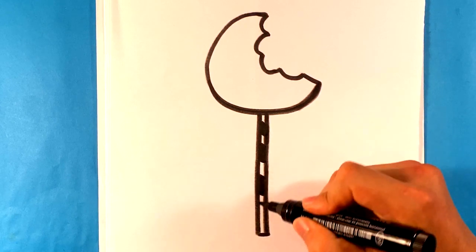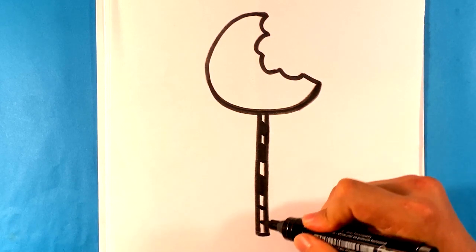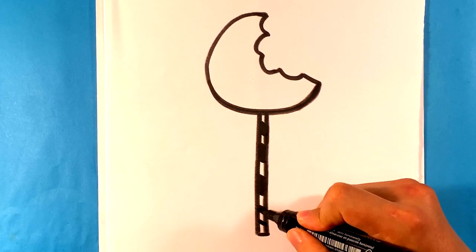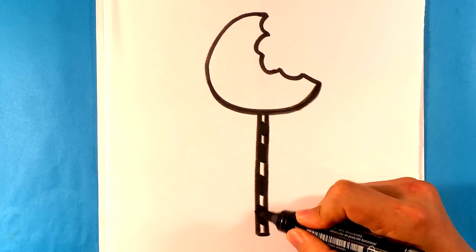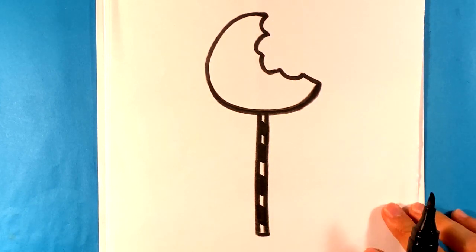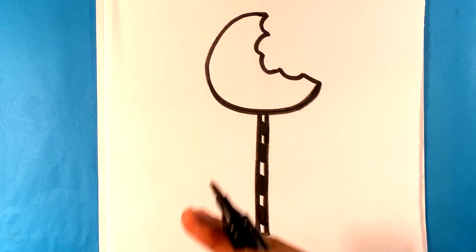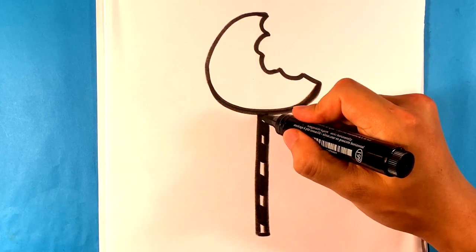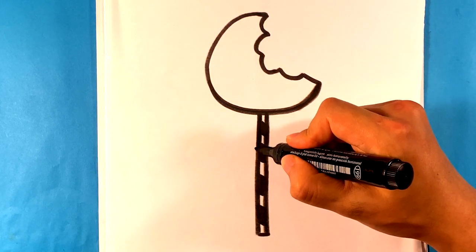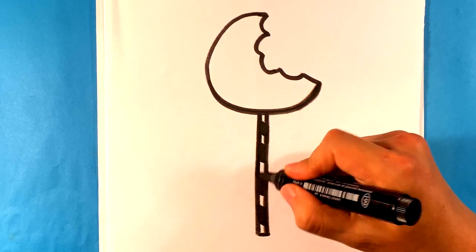So I'm doing right here, like I said, going along right there again, giving that kind of angle and then giving that kind of look to the actual lollipop here.